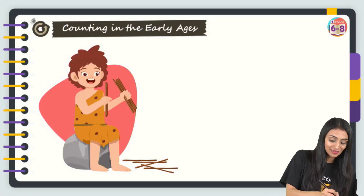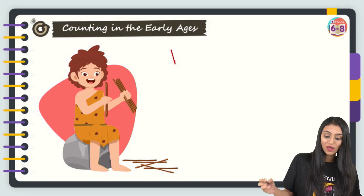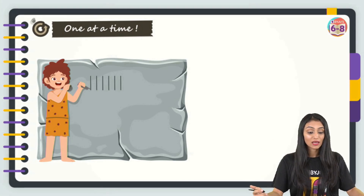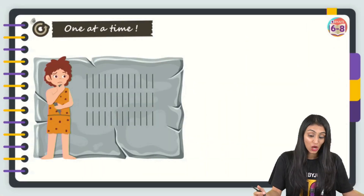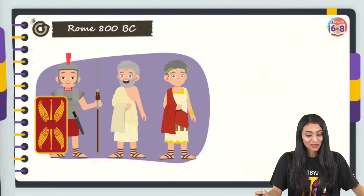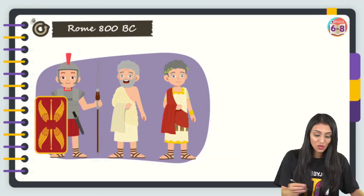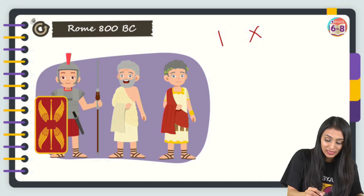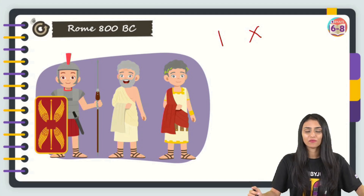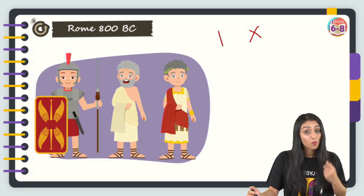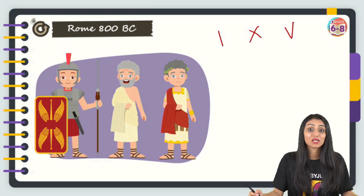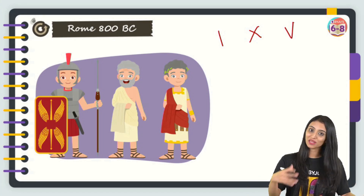Initially, Romans used a single stroke — like 'I' — to represent one unit. But when it came to representing large numbers, it became a mess. Romans were sharp, so they decided to cross out the original stroke with a forward line and started using 'X' to represent 10. For 5, since it is exactly half of 10, they cut the X in the middle, giving a 'V'. So V represents 5.